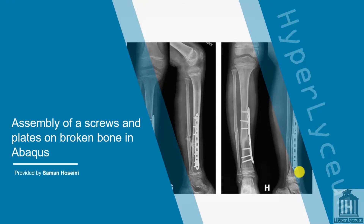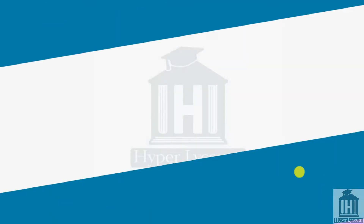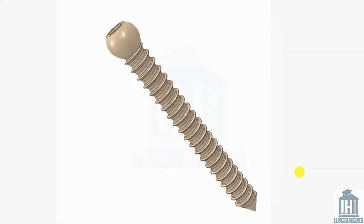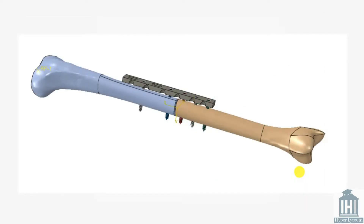Bone fixation is a common method of treating fractures. In this method, the broken bones will be held in place with external fixators, such as metal pins, plates and screws. By the end of the session, you will be able to effectively use the assembly module tools for your biomechanical models.